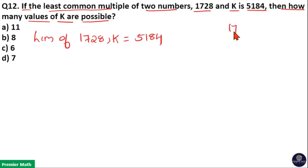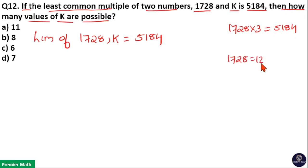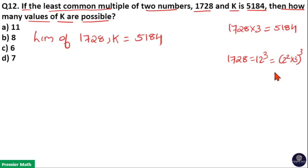Here, 1728 × 3 is equal to 5184. And 1728 is equal to 12 cubed. 12 cubed is equal to (4 × 3) whole cubed. Taking prime factors of 1728: 4 can be written as 2 squared, which means prime factors of 1728 are 2 raised to 6 and 3 cubed.